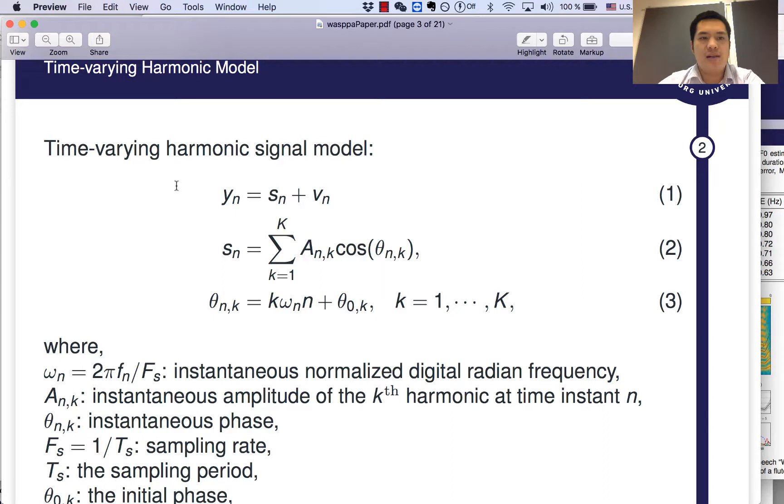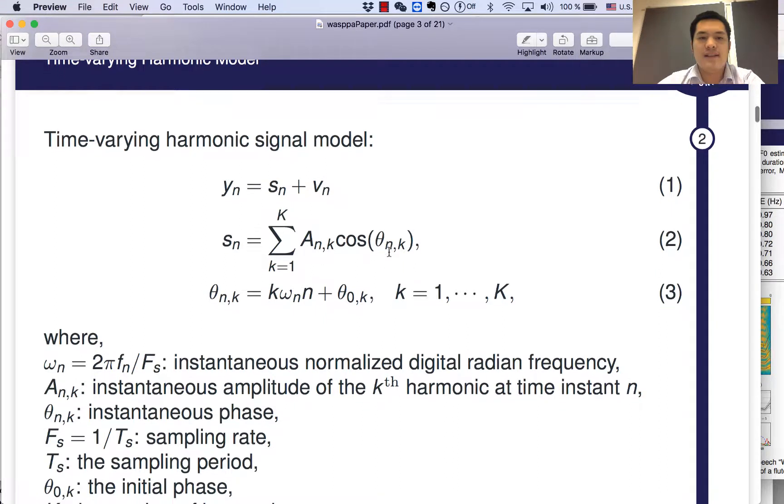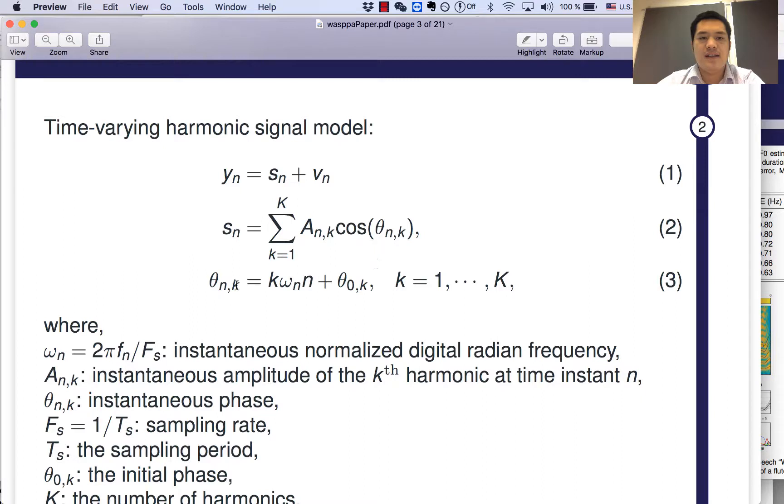Consider the harmonic model as equation one. The y_n represents the noisy speech, s_n is the speech, v_n is the noise. s_n can be denoted by a parametric model, that is, the harmonic model as equation two. And both the amplitudes and frequencies are time varying. You can see the time index n here. And the capital K represents the number of harmonics. θ_{n,k} represents the phase, the instantaneous phase, which can be denoted as equation three.